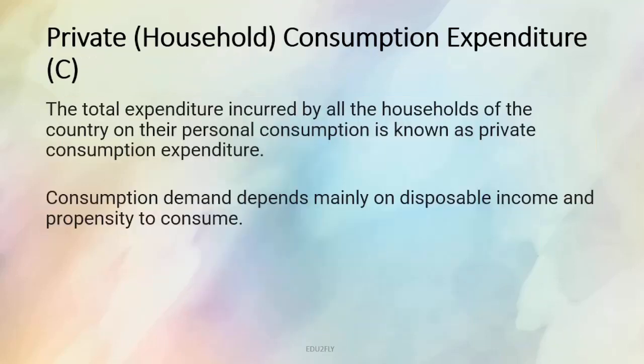First one is the household consumption expenditure, which we denote by C. The total expenditure incurred by all the households of the country on their personal consumption is known as private consumption expenditure. Saare households jitne bhi ek country mein hai, unhone kitna personal consumption pe apna expenditure kiya hai — that is private consumption expenditure C. Yeh survival needs pe bhi depend karta hai, jaise ki house lena, clothes lena — jo bhi household waale khareedte hai, that is the private consumption expenditure.